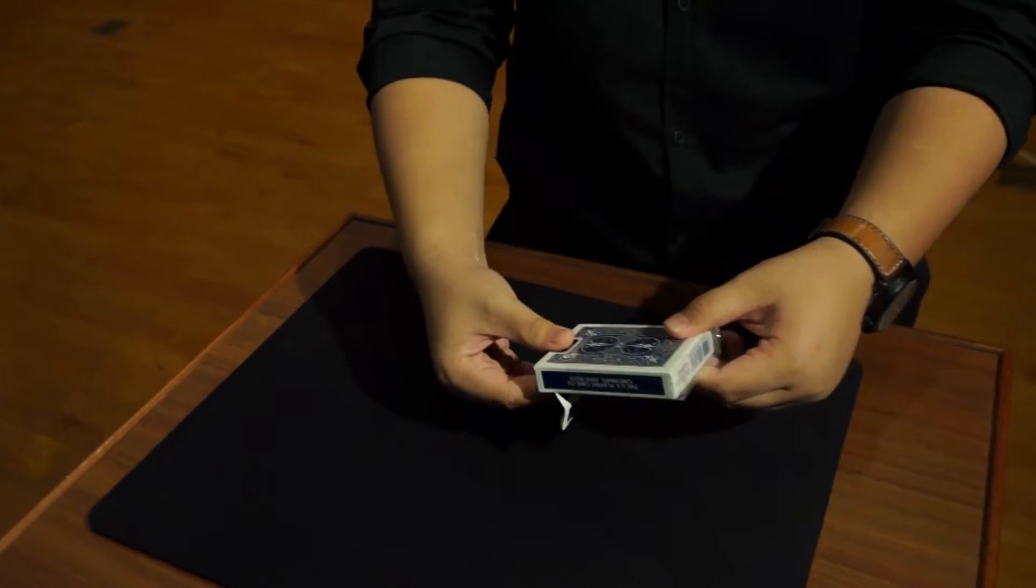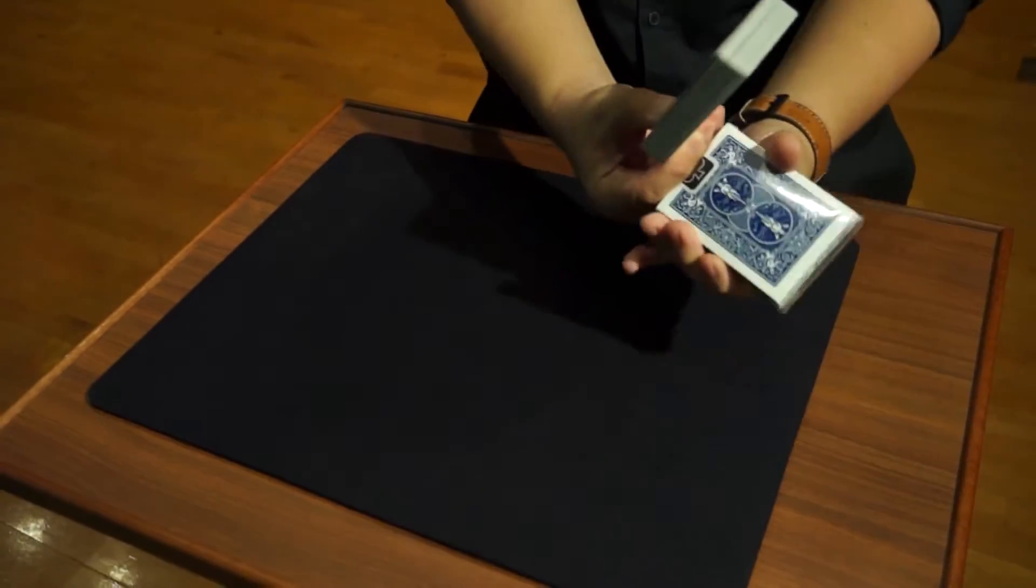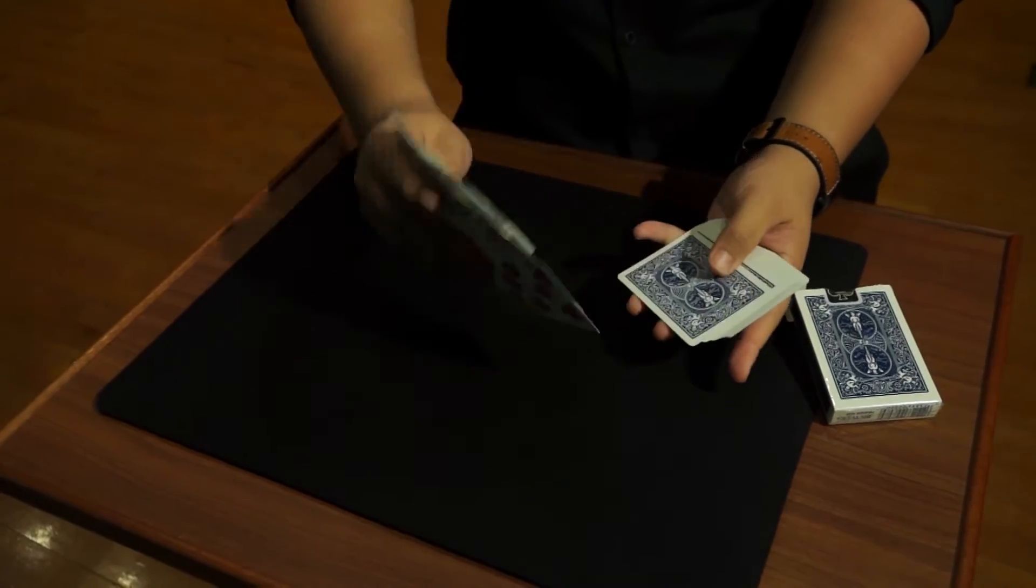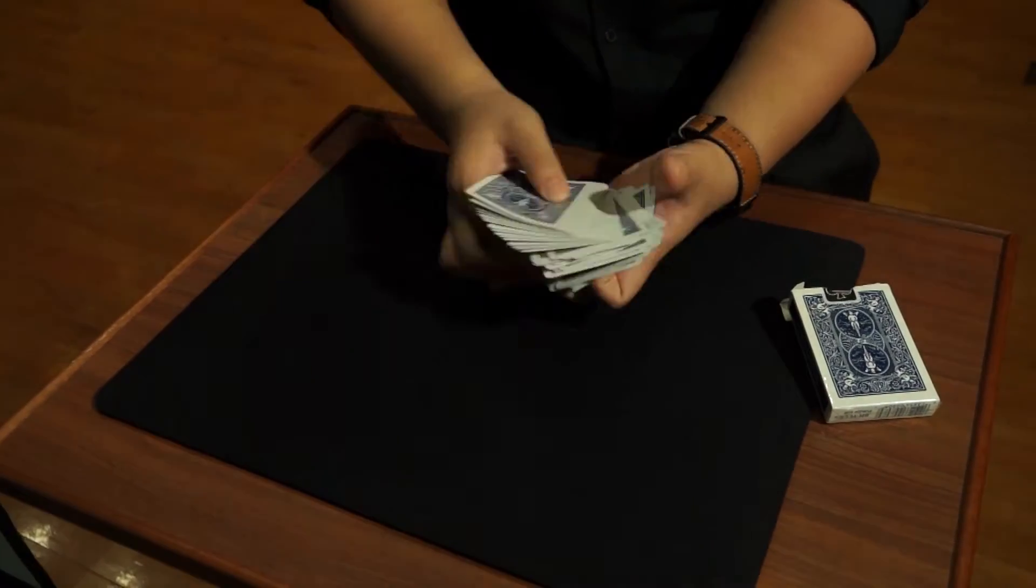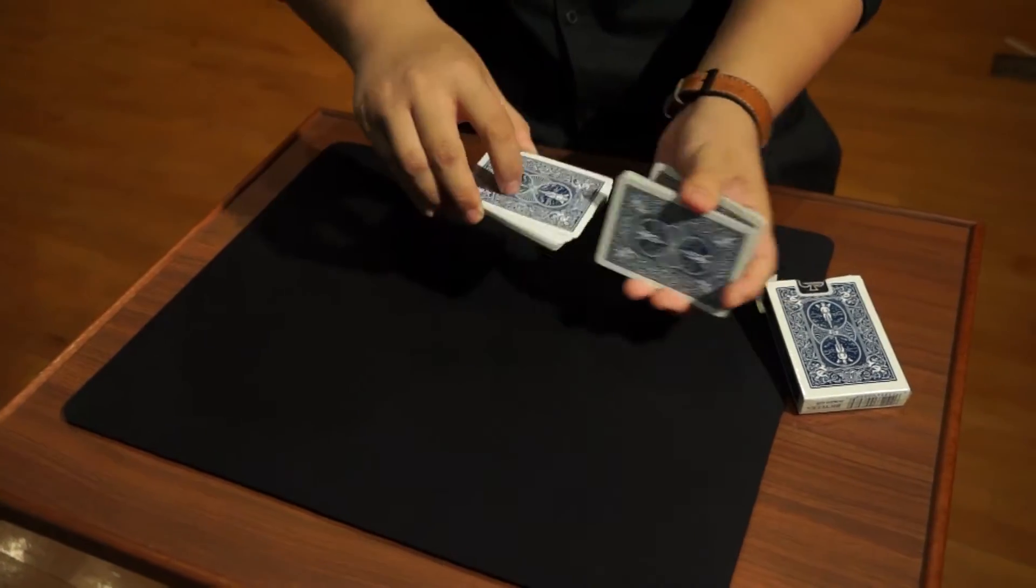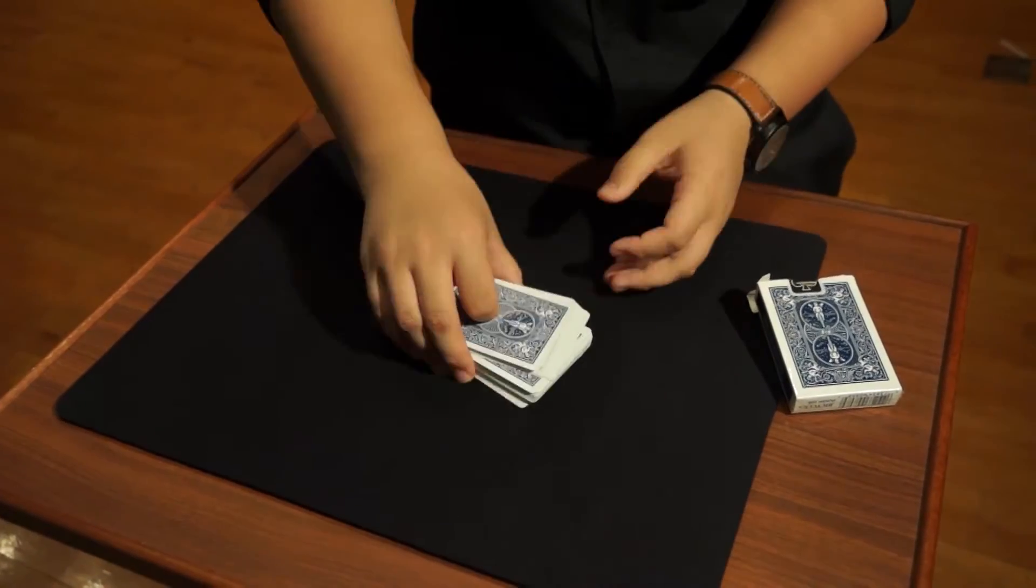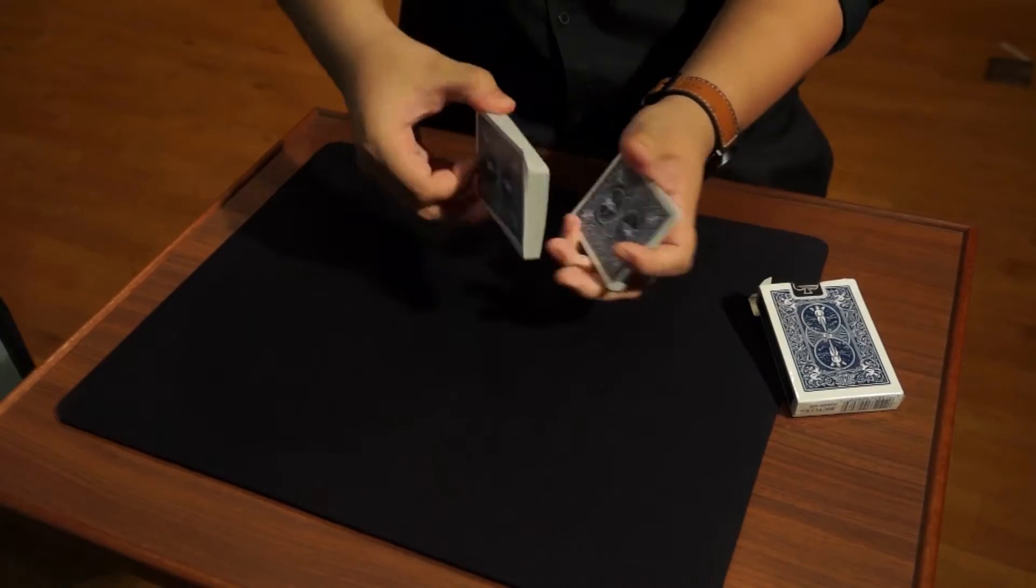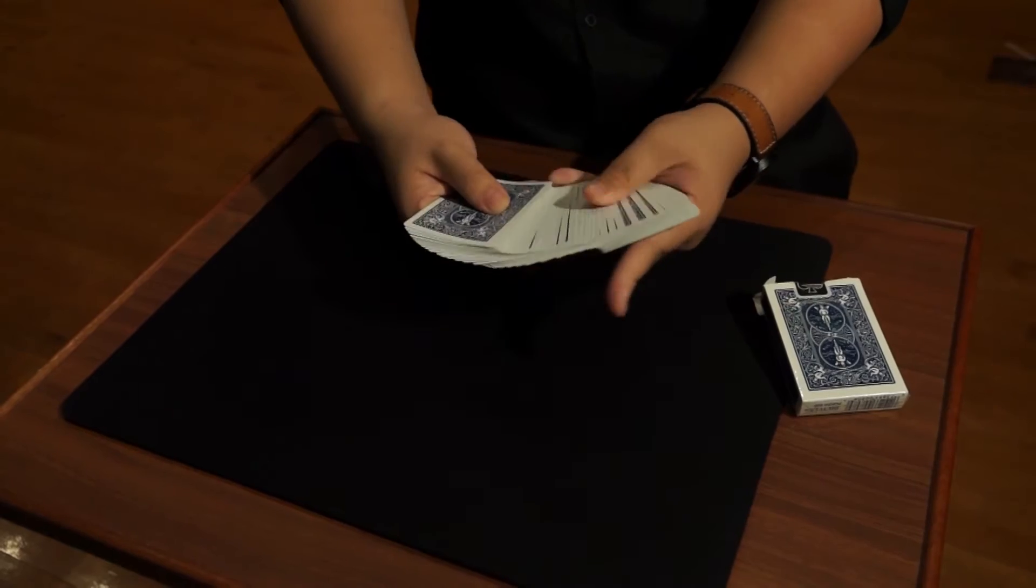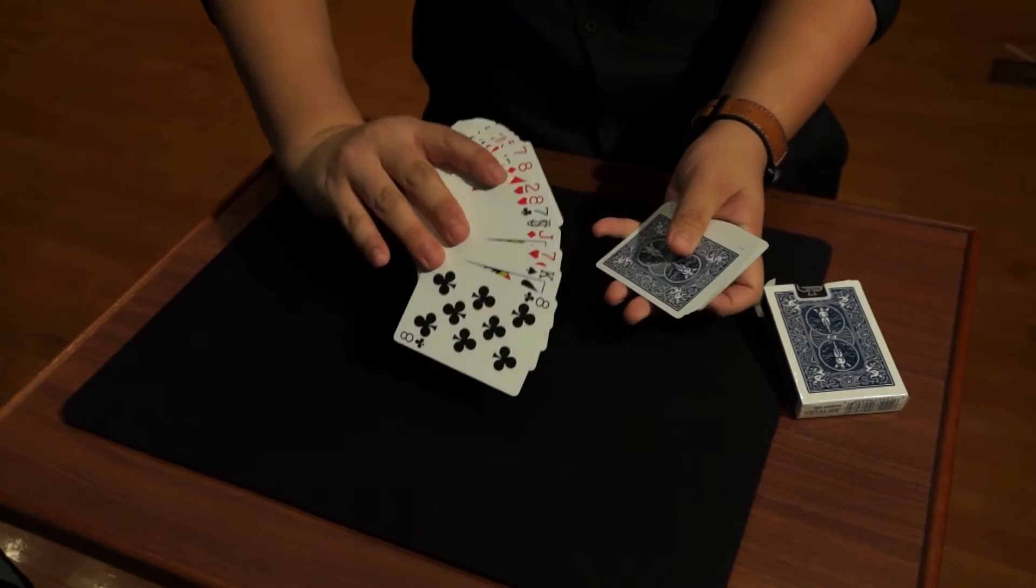Now we have a deck of cards right here. We all know that there's 52 playing cards in the deck, all different. To assure you, I'll give it a few more shuffles. That should do it. We have a mixed deck of cards. You can see all the cards are different.